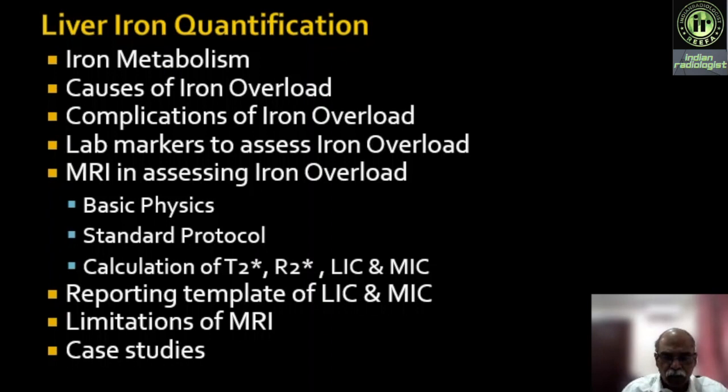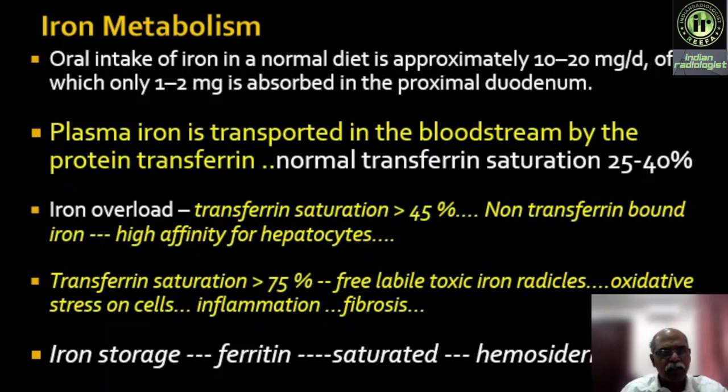Looking at iron metabolism per se, the overall intake of iron in a normal diet is approximately 10 to 20 milligrams per day, of which only 1 to 2 milligrams is absorbed in the proximal duodenum. This is facilitated by a protein known as hepcidin, which is produced by hepatocytes. Whenever there is an abnormality in this protein hepcidin, there is abnormal intestinal absorption of iron.